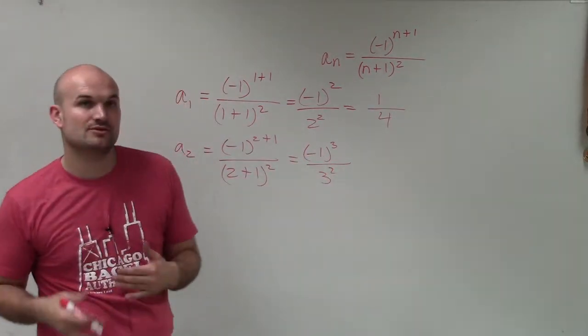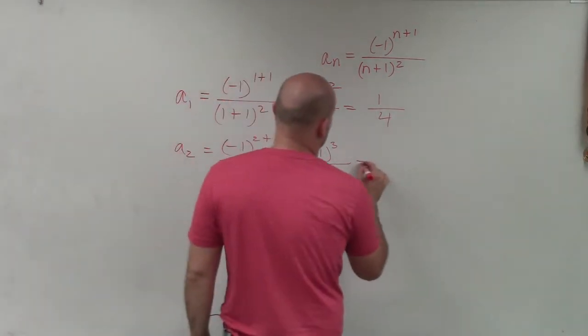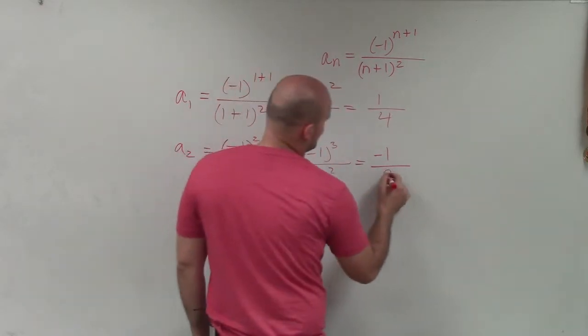Well, any negative number raised to an odd power is now going to become negative. And 3 squared is going to be 9.